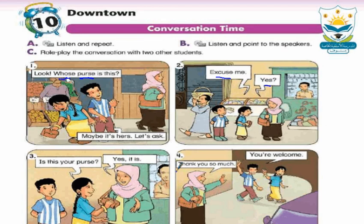Again: Sarah says 'Look, whose purse is this?' Ali says 'Maybe it's hers. Let's ask.' Sara says 'Excuse me.' The woman answers 'Yes.' Sara asks 'Is this your purse?' The woman says 'Yes, it is. Thank you so much.' And they said 'You're welcome' — العفو أو على الرحب والسعة.